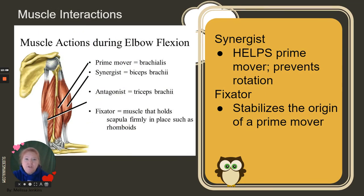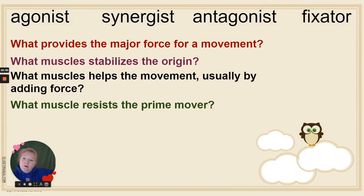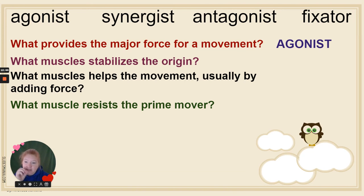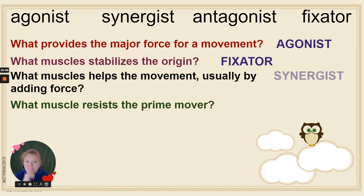There are two other interactions: synergist and fixator. The synergist is the helper — they help the prime mover and help prevent unwanted rotation. The fixator stabilizes the origin, fixing it and holding it in place to keep that origin steady. So: the agonist provides the major force for movement; the fixator stabilizes the origin; the synergist helps the movement by adding force, like three people pushing a car instead of one; and the antagonist resists the prime mover.